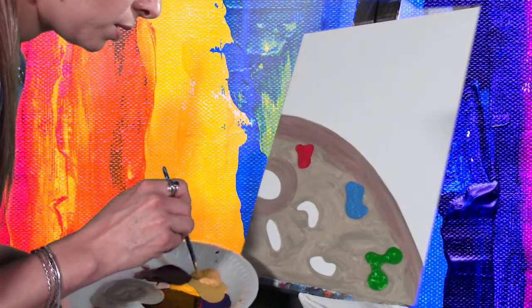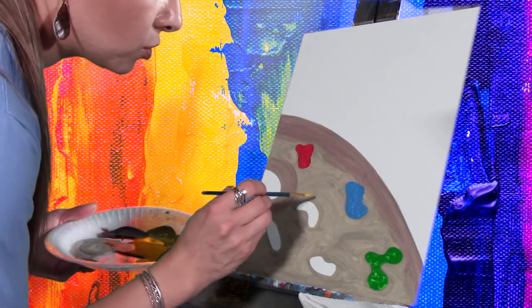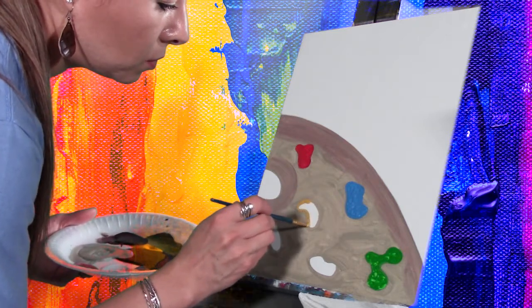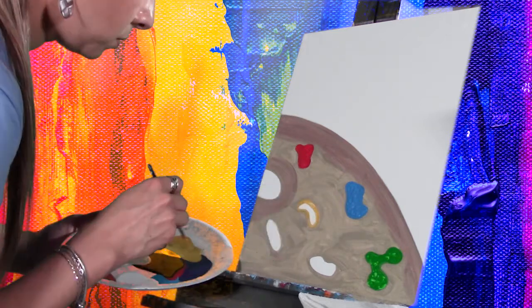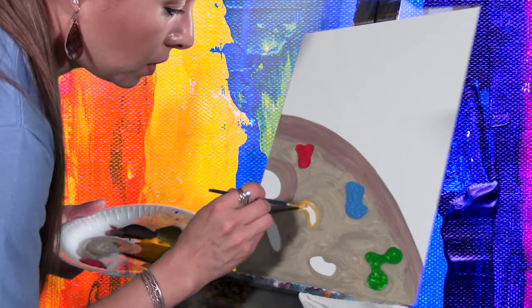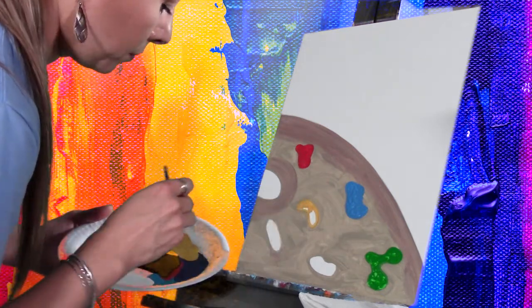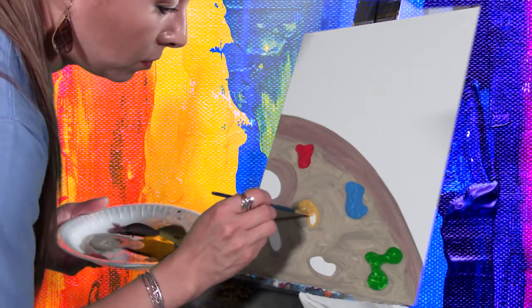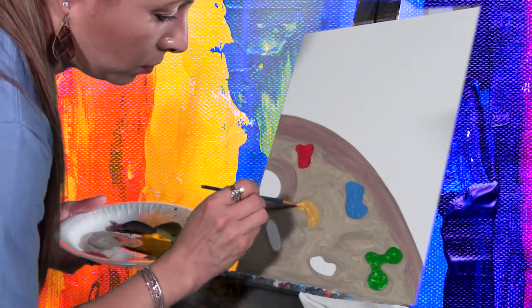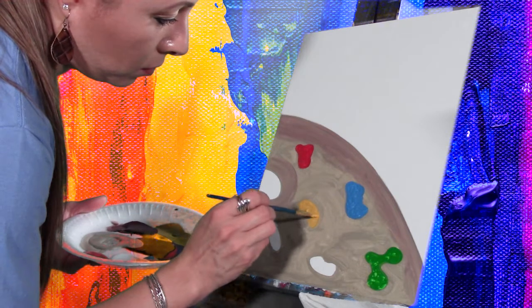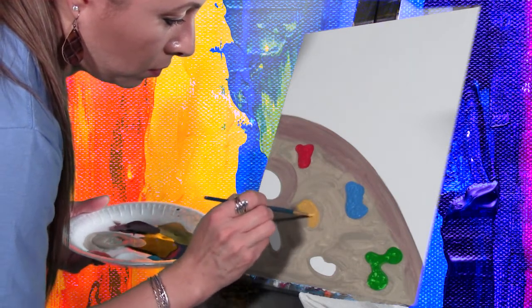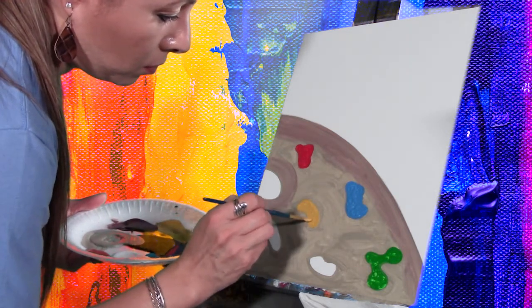The next color I'm going to use is yellow. Let's get some yellow paint. I'm going to trace this middle one with the yellow, then fill it in, dab it in. Then clean your brush.